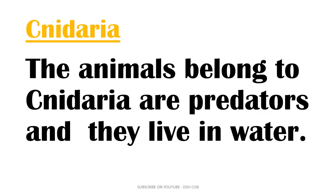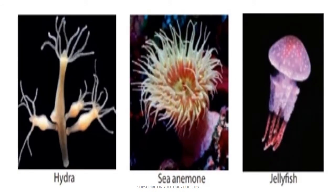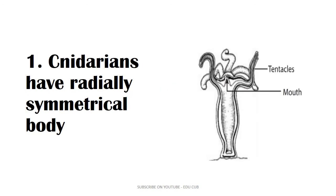The first group is Cnidaria. The animals belonging to Cnidaria are predators and they live in water. Some examples are: hydra, sea anemone, and jellyfish. Cnidaria have a radially symmetrical body, meaning the body can be divided into two equal halves along several axes.